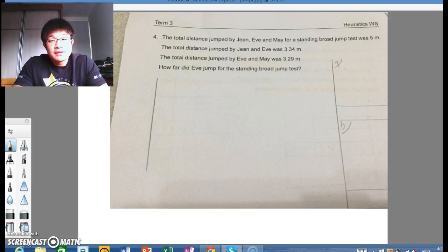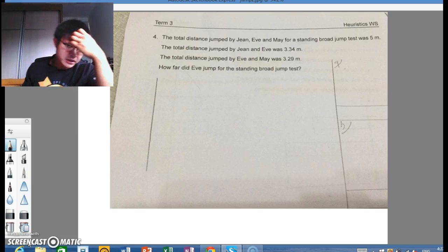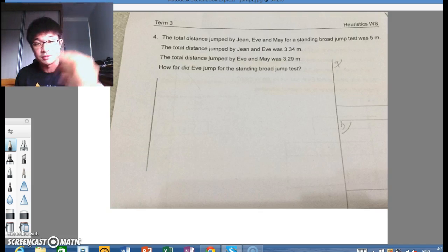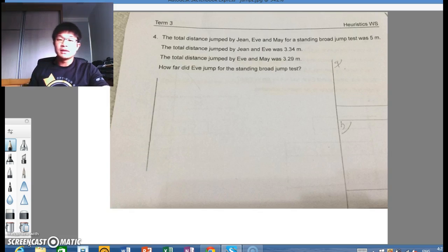So for today, I will do a very simple question, or rather a question that can be solved with two very simple models. So here we go. The total distance jumped by Gene, Eve, and May for a standing broad jump test was 5 meters. The total distance jumped by Gene and Eve was 3.34 meters. The total distance jumped by Eve and May was this. So how far did Eve jump for the standing broad jump test? So first of all, we are given this. We were given this, so let us start with that.